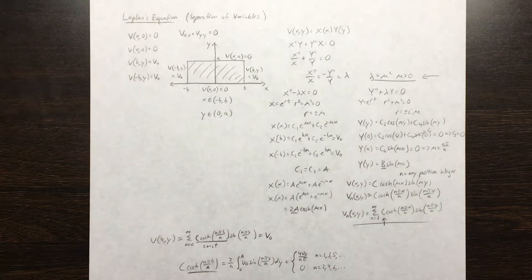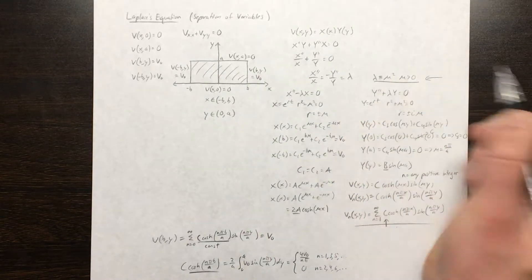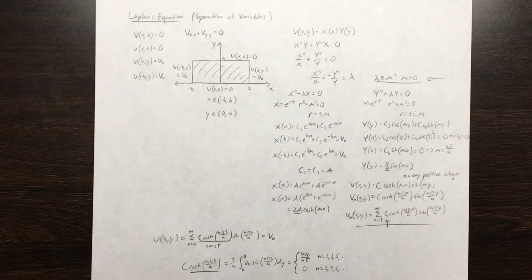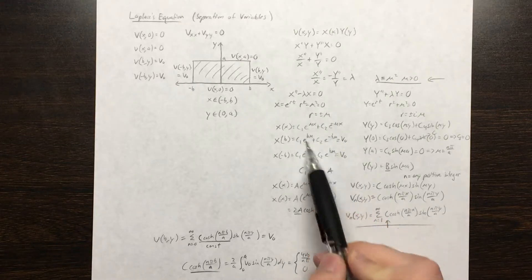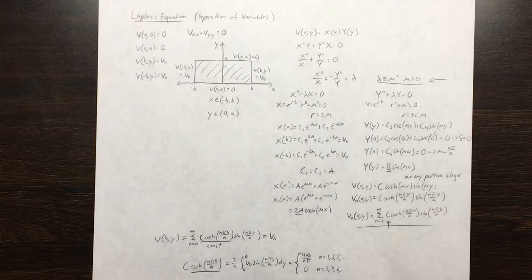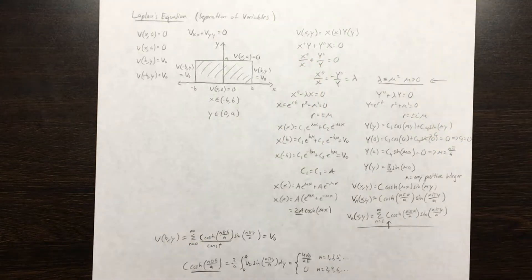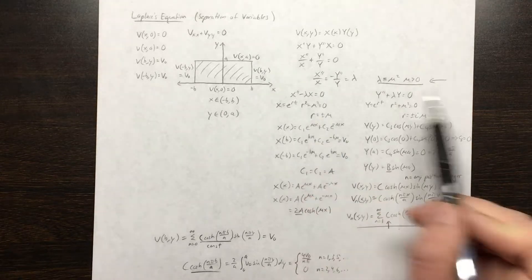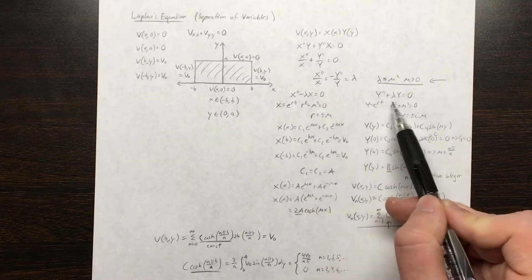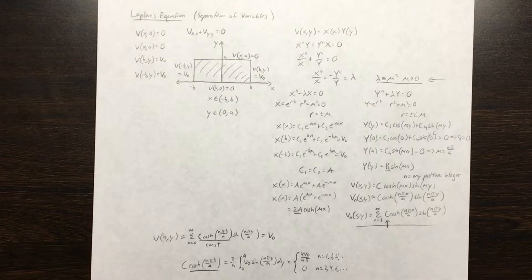We're going to define this constant as mu squared, where mu is positive. After solving the two ODEs we're about to obtain, we'll come back and talk about why I chose to define the constant in such a way. By covering up one term we obtain one ODE, and covering the other we obtain another ODE — one depends only on x, the other only on y. This is how we break down our PDE into two ordinary differential equations: second order linear homogeneous differential equations.